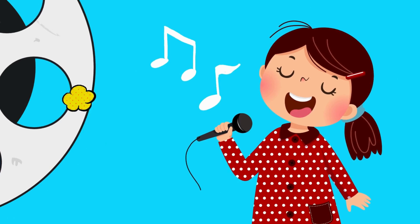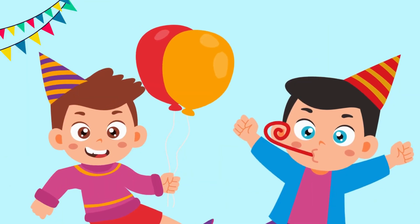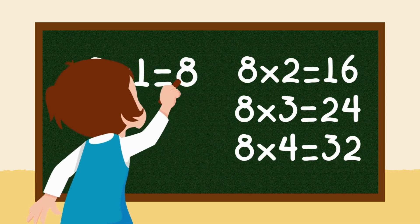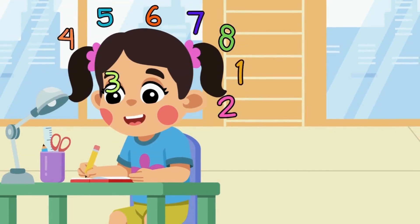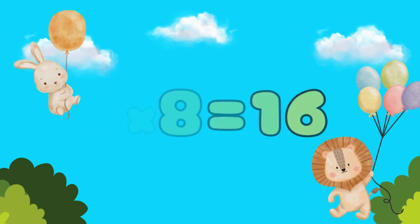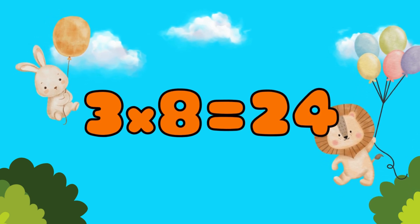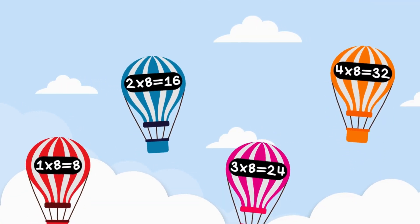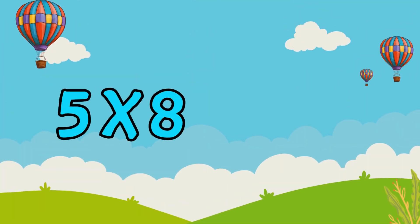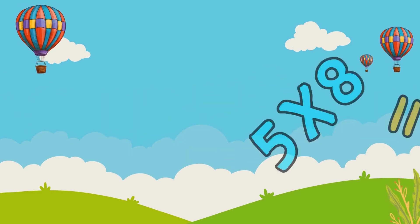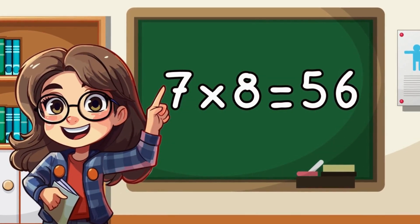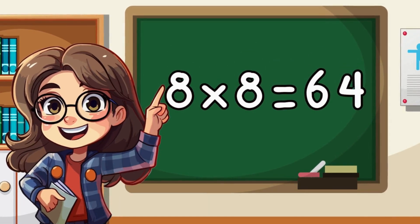Let's sing the song of eight, it's time to celebrate! When we multiply by this rate, math will never complicate. Two-eight, a sweet sixteen. Three-eight, twenty-four is seen. March on, numbers clean and lean. Four-eights are thirty-two, our queen. Five-eight, they make forty. Six-eight, forty-eight, we're hearty. Seven-eight, fifty-six, the smarty. Ended by eight, sixty-four's the party!